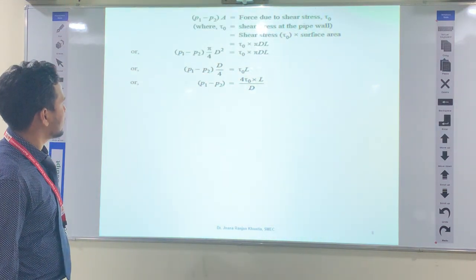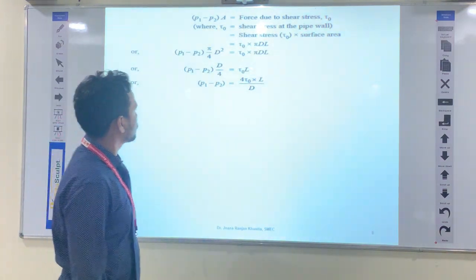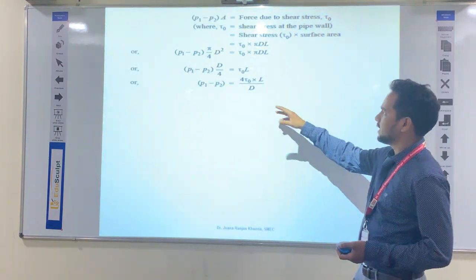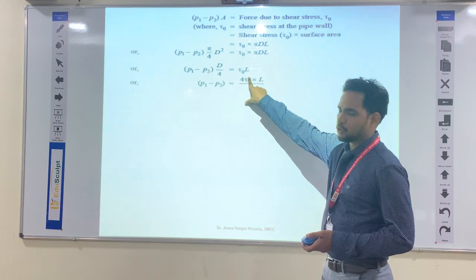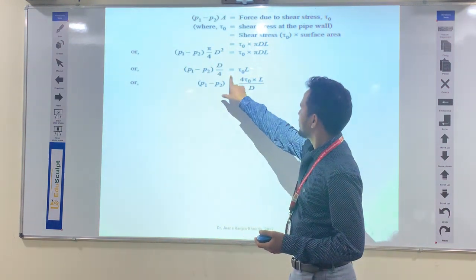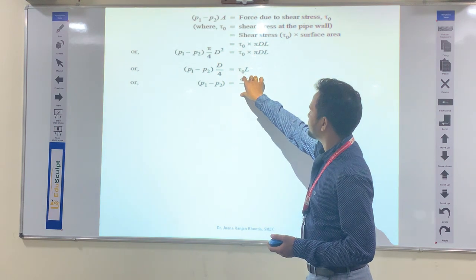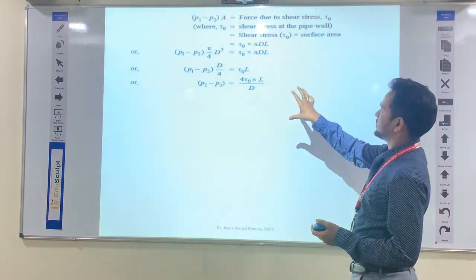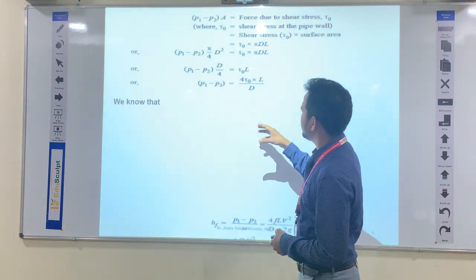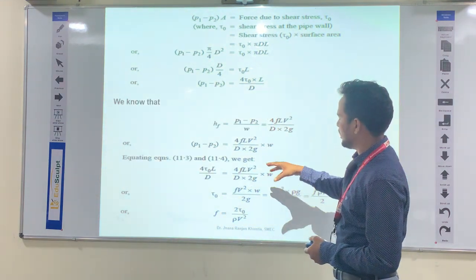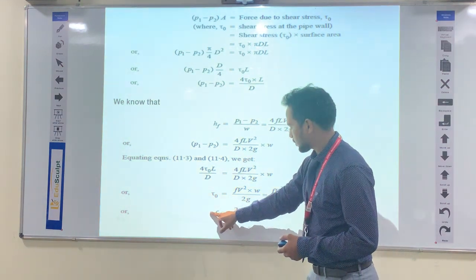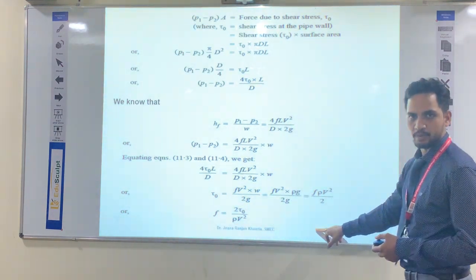We can also write the friction formula in terms of shear stress. Replacing the pressure difference using shear stress tau-naught (the shear stress at the pipe wall), we finally get the friction factor f = 2 × tau-naught / (rho × V²).